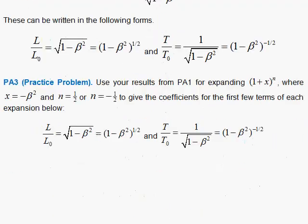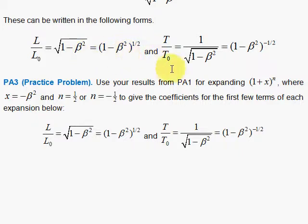A nice problem to do is to look at Lorentz contraction and time dilation, and do an expansion in terms of a Taylor series. The first term is your Newtonian term — you'll find it equals one, meaning lengths are the same — and then the first correction is according to Einstein's theory of relativity. Have fun playing around with Taylor series and the correspondence limit as beta gets smaller and smaller, recovering Newtonian physics from relativistic physics.